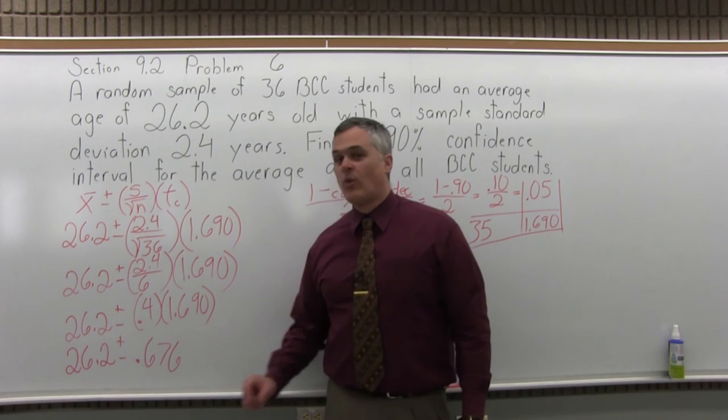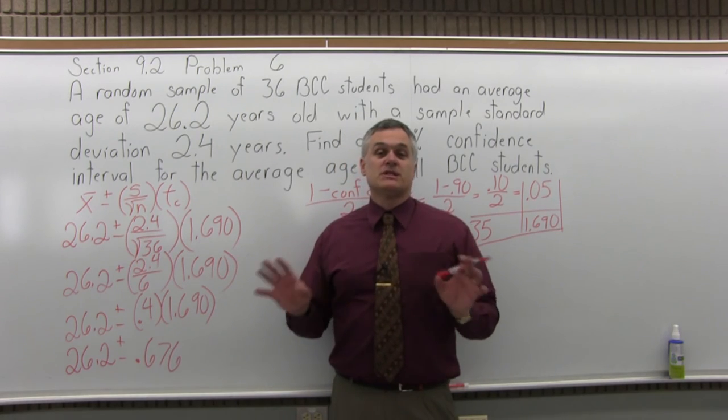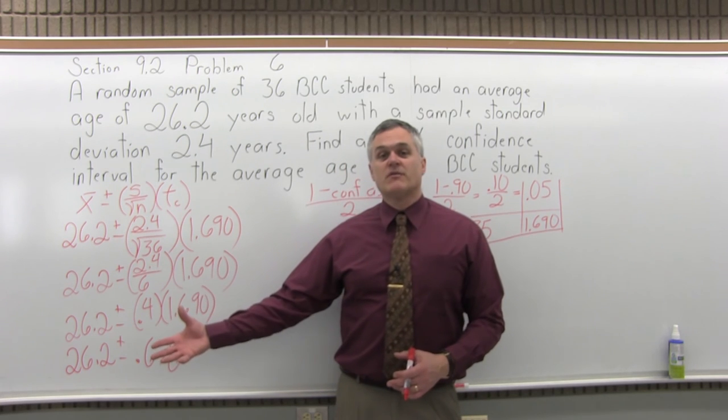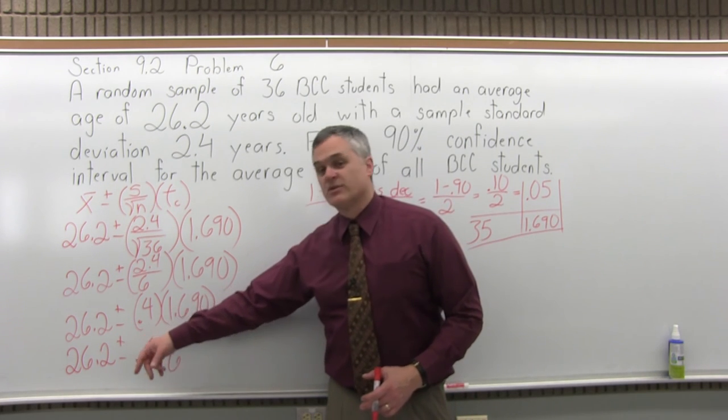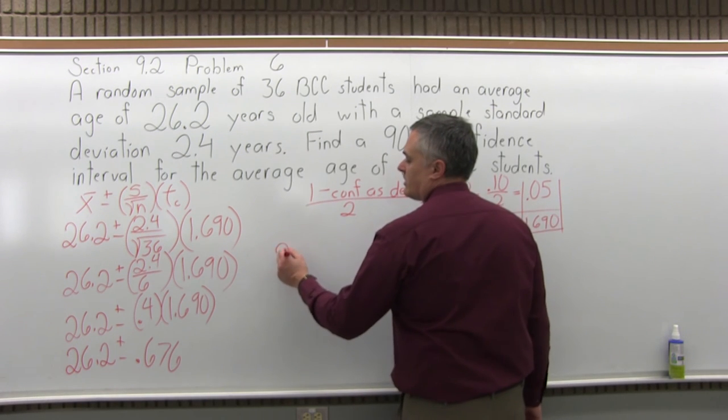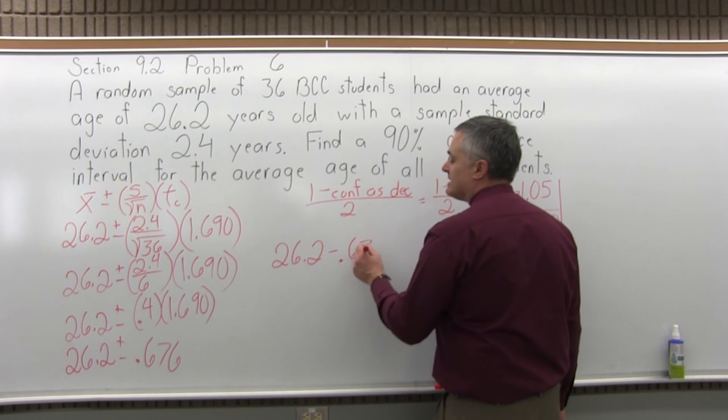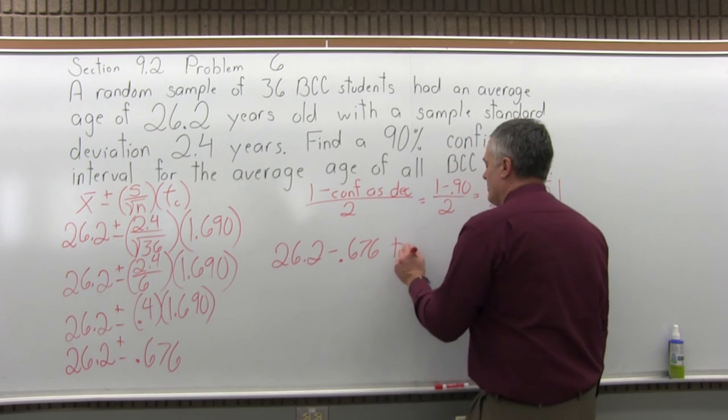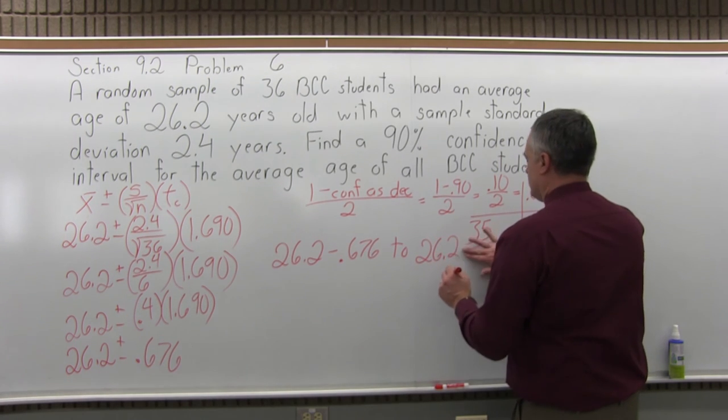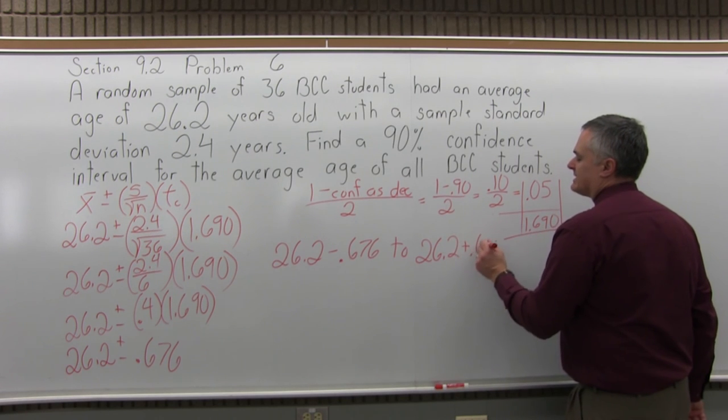And once we get to the point where we just have one number value after the plus and minus, that's where we can split into a separate minus and a separate plus. The branch with the minus will give me the low end of my confidence interval, and the branch with the plus will give me the upper end of my confidence interval. So my confidence interval is going to go from 26.2 minus .676 to the upper end will be 26.2, let's make a little bit of room, plus .676.